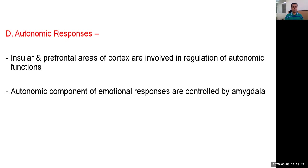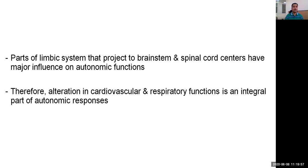Autonomic responses: Insular and prefrontal areas of the cortex are involved in the regulation of autonomic functions. Autonomic components of emotional responses are controlled by the amygdala structure of the limbic system. Parts of the limbic system projecting to the brainstem and spinal cord centers have major influence on autonomic functions. Therefore, alteration in cardiovascular and respiratory functions is an integral part of the autonomic response.